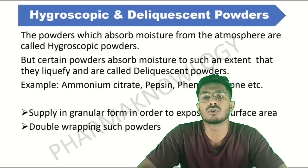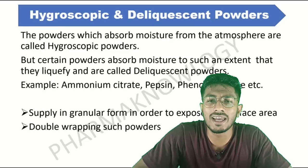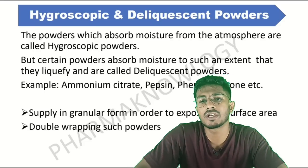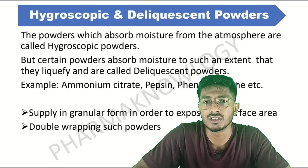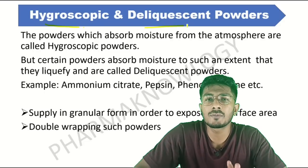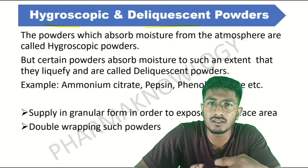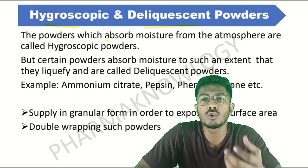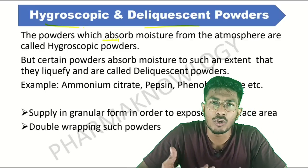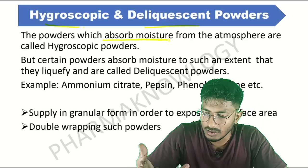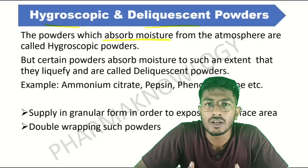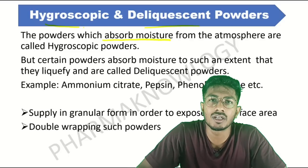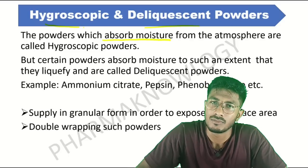The first one is hygroscopic and deliquescent powders. So what are hygroscopic and deliquescent powders? Hygroscopic powders means that you have some powders or substances that, when you keep them in the atmosphere, they absorb moisture from the surrounding air.